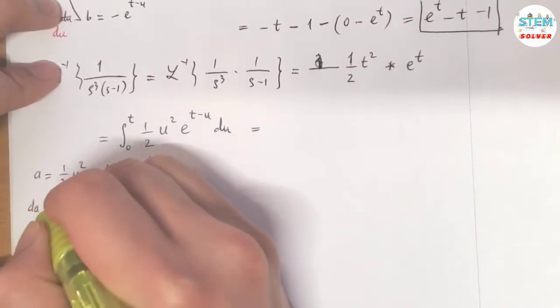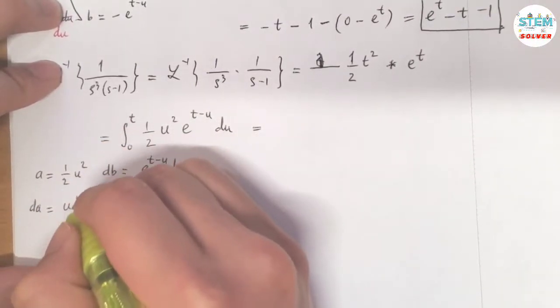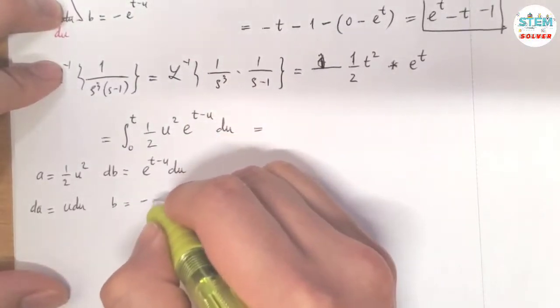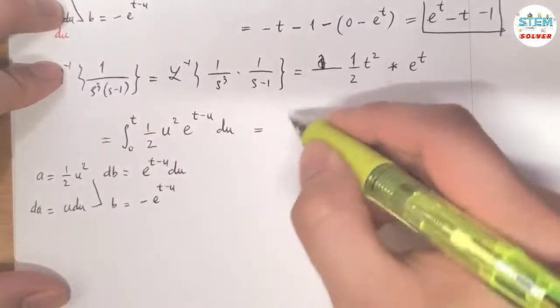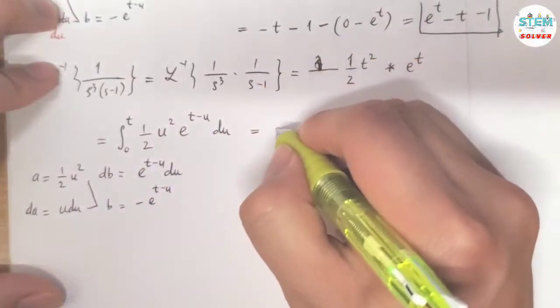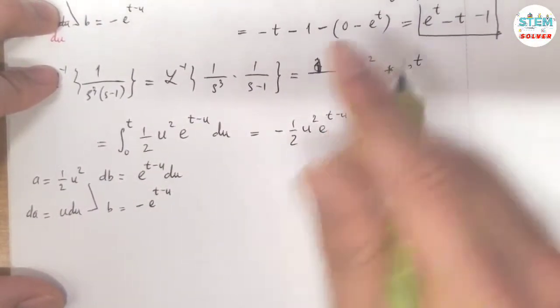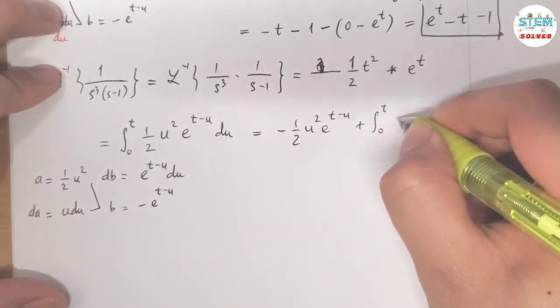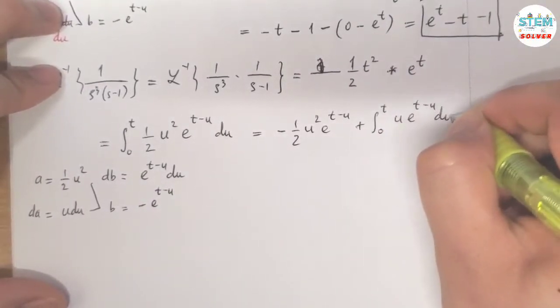Now take the derivative of a. I have u du. Take the integral of b, db. I have negative e to the t minus u. Okay. Now this becomes negative 1 half u squared e to the t minus u minus negative, which is positive. The integral from 0 to t, u e to the t minus u du. Okay.